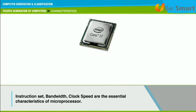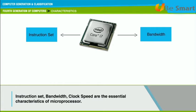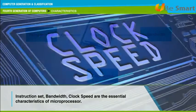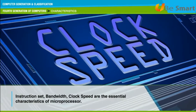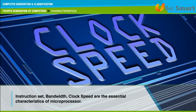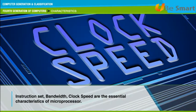Instruction set is the set of instructions that the microprocessor can execute. Bandwidth is the number of bits processed in a single instruction.